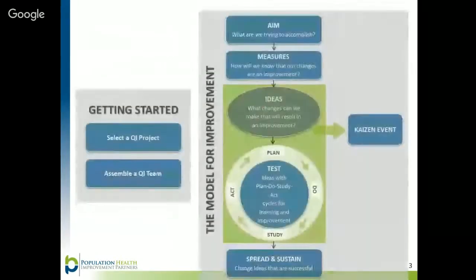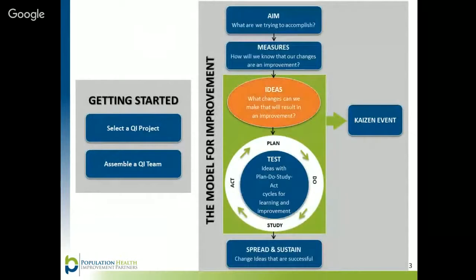Once your team has established the aim of your project and determined how you will measure improvements, the next step is to identify specific change ideas you want to make and prioritize which ideas to focus on first. The Fishbone Diagram helps your team drill down to the root cause so that you can identify specific change ideas. It is important to drill down to the root cause before identifying any specific change ideas.